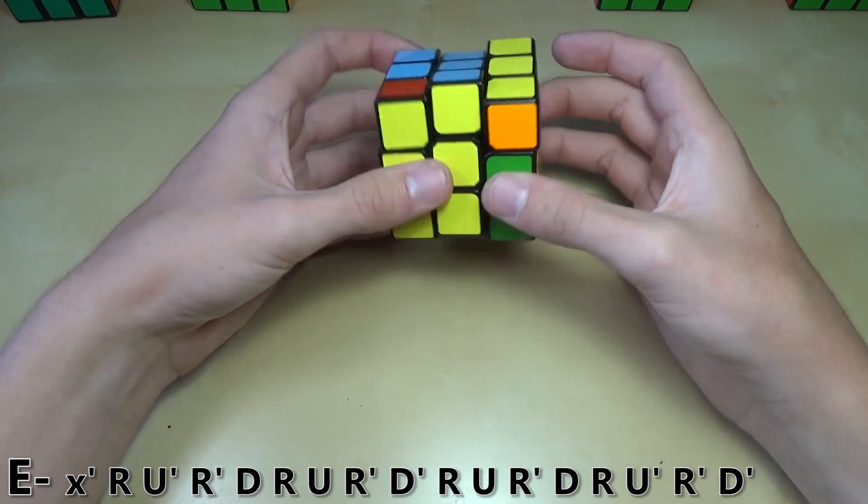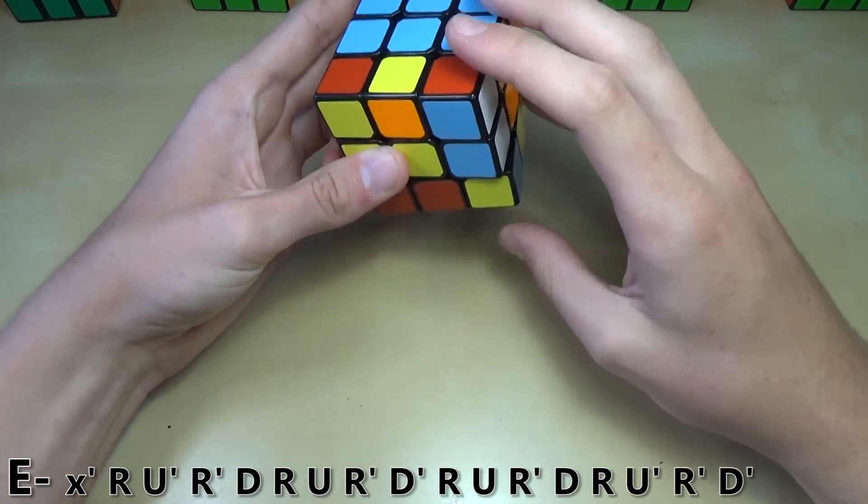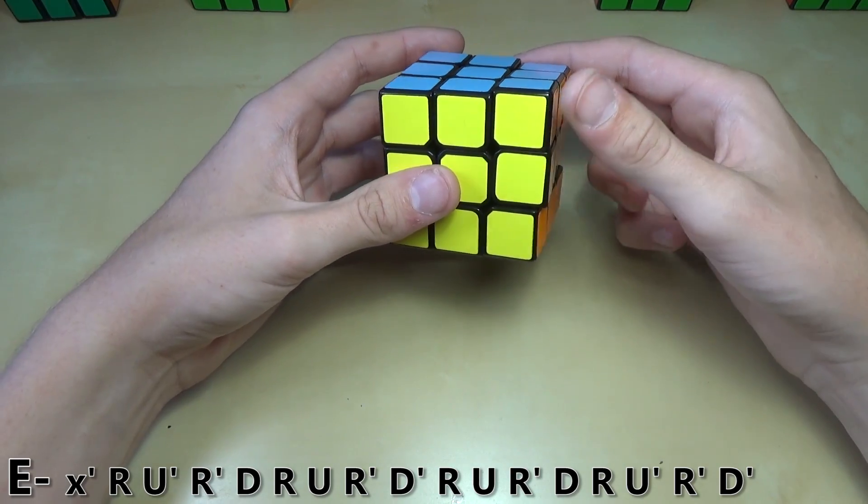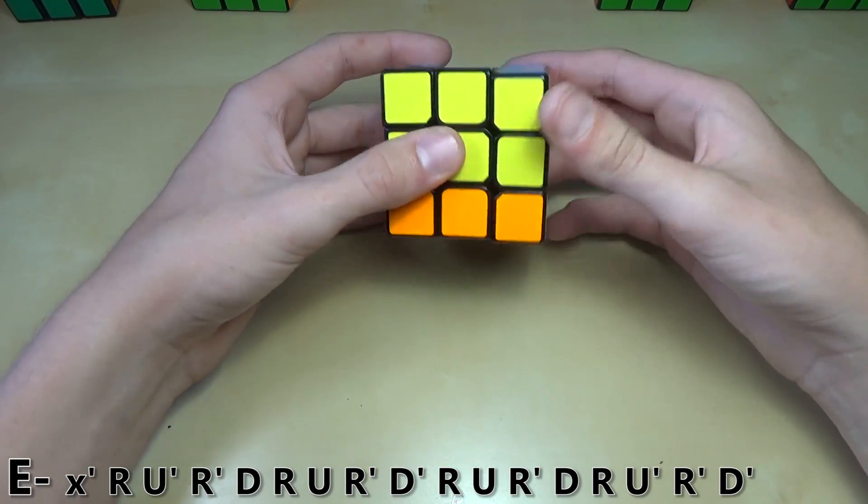The way that I originally did it was like this. You may have noticed it was really awkward and slow when I had to re-grip to do the D' move with my right hand like this.